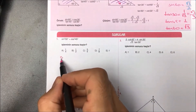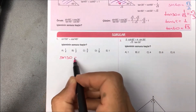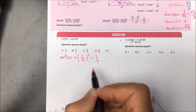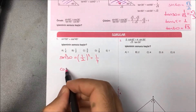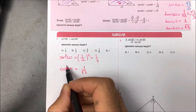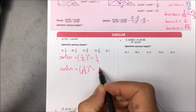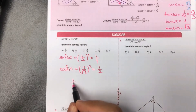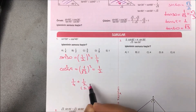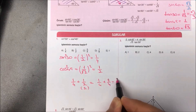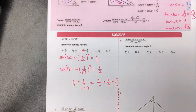Birinci soruda sin²(30) + cos²(45) isteniyor. sin(30) = 1/2, karesi 1/4. cos(45) = sin(45) = 1/√2, karesi 1/2. İkisini topladığımızda 1/4 + 2/4 = 3/4 olarak bulunur.